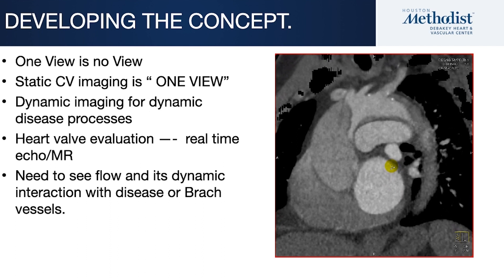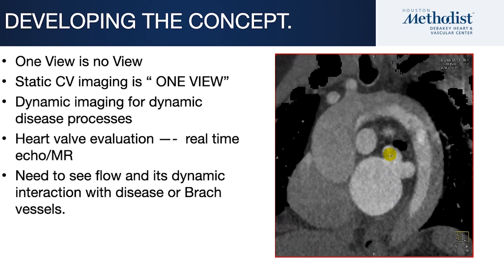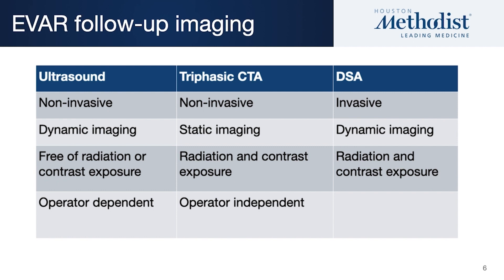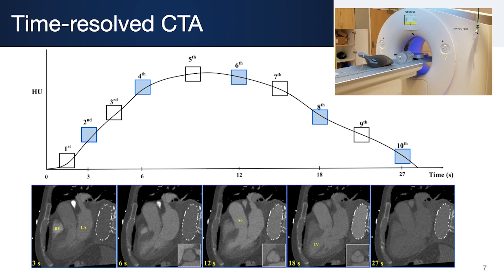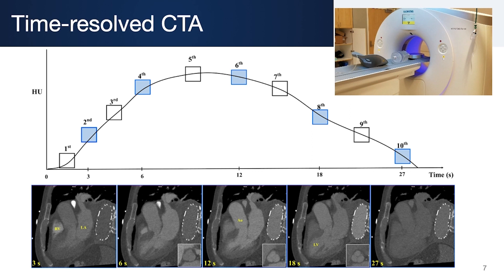Nobody would ever think of looking at heart valve disease with static imaging — it has to be dynamic. And aortic disease is amongst the most dynamic disease processes that we have to deal with. EVAR follow-up can be used in a variety of different ways, basically using ultrasound, triphasic CTA, and DSA if we're going to think about intervening. A lot of this can be provided with dynamic, or what we call time-resolved CTA.